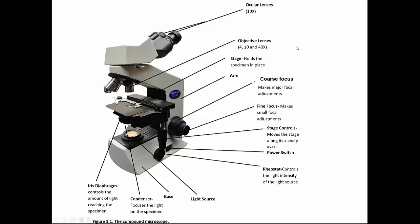The scopes we'll be using usually have 4, 10, and 40 times objective lenses. If you're set to 4 times on your objective lens and your ocular lens magnifies everything 10 times, that means the overall view is 40 times magnification. Your scopes can go from 40 to 400 times total magnification.